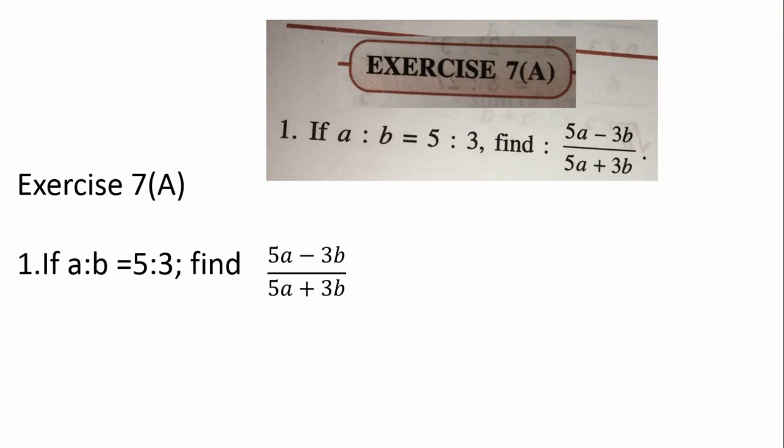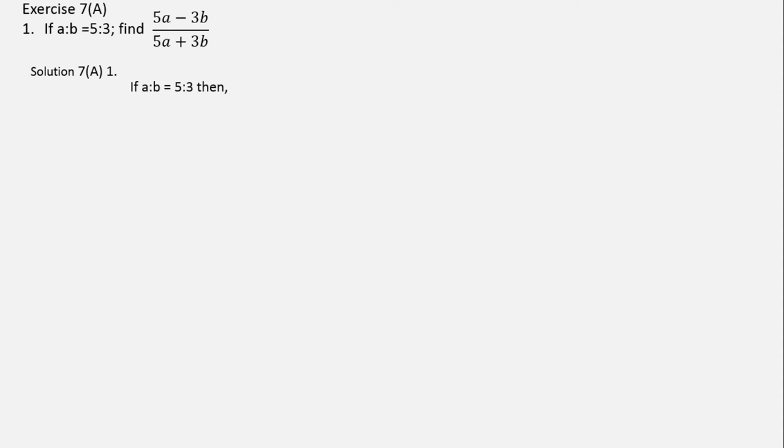This question from exercise 7a is saying: if a is to b is equal to 5 is to 3, then find 5a minus 3b over 5a plus 3b. This is the question and let's see how we are going to solve it.